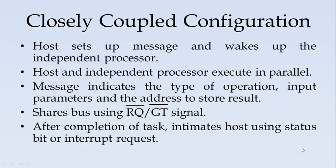In the shared memory space, the host sets up a message and then wakes up the independent processor. The host and independent processor can then execute in parallel as long as they do not use the address and data bus simultaneously. The message indicates the type of operation to be performed, the input parameters, and where to store the result. Once control is taken by either the 8086 or the independent processor, bus sharing is done using the request and grant signal lines.